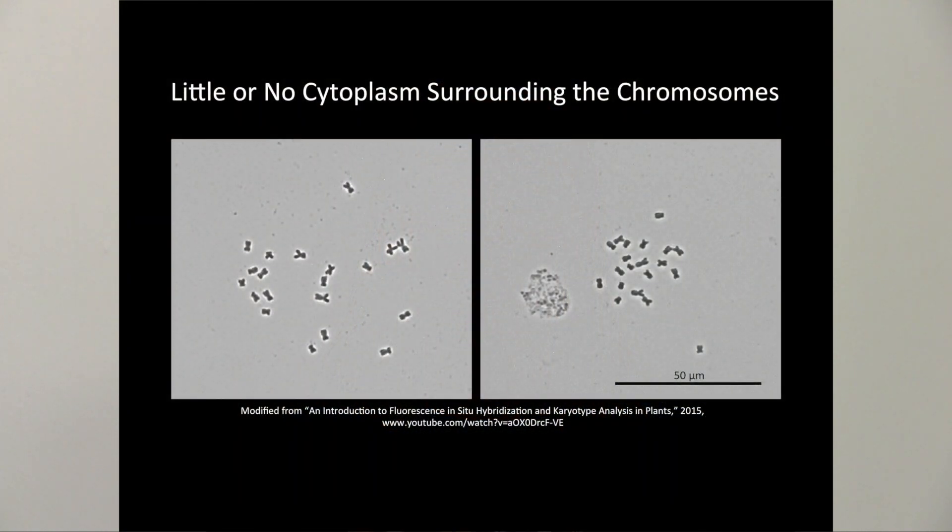When it comes to visualizing small target FISH signals, starting with a good cell preparation is just as important as having a good probe. The introductory video provided guidelines for judging the results of the root tip digestion step. When working with small targets, strive for the best cell preparation possible, little or no cytoplasm visible around the chromosomes.